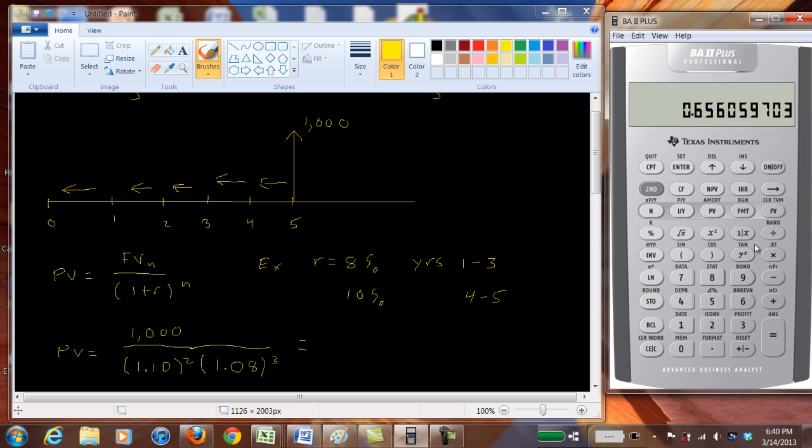So that's 1.524, which is 1.10 squared times 1.08 cubed, and we really want to flip that over. So I'm going to hit the 1 over x key and now I'll multiply it by a thousand and we get 656.06.